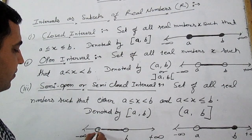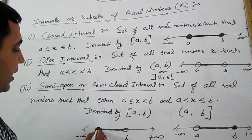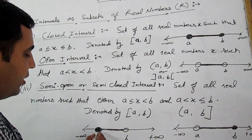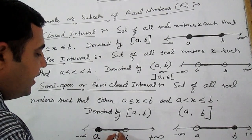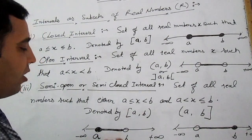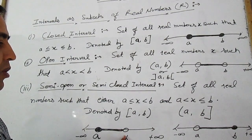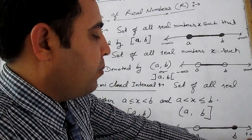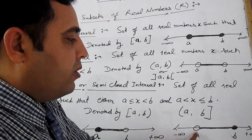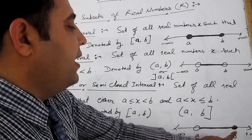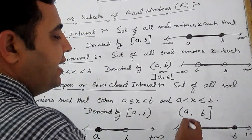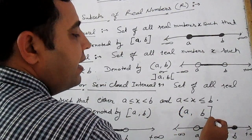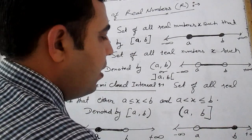On the number line, from minus infinity to plus infinity: in the form [a, b), a is included and all elements between a and b are included, but b is not included. In the other form (a, b], a is not included but b is included. This is written with a small bracket on the side of a and a big bracket on the side of b.